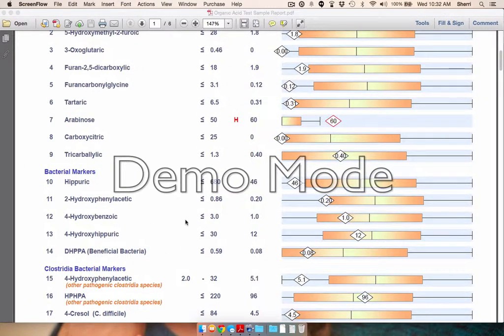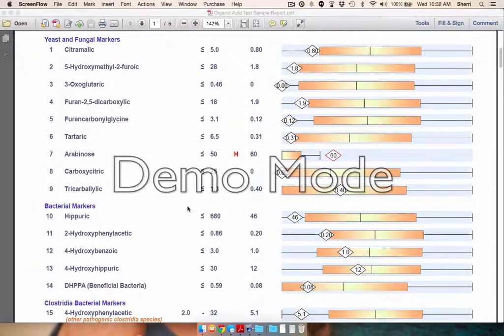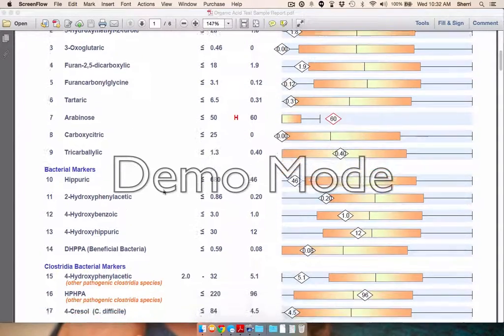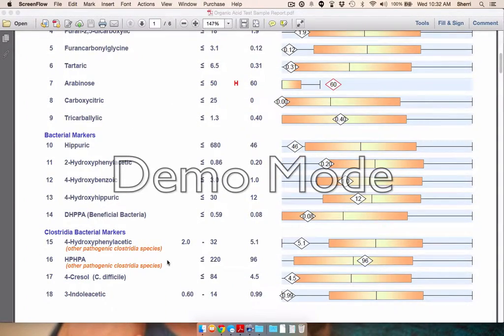It's not the be all end all. I will often run a digestive stool analysis if a lot of things show up here, but it definitely gives you a really good idea of what's going on. And if somebody has a ton of markers, we know that there is a clear gut dysbiosis going on with this person. This person's gut actually looks pretty good.